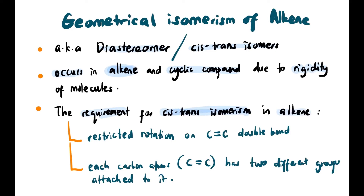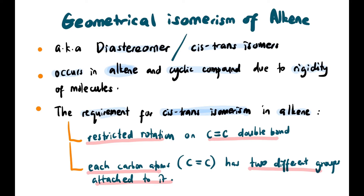Geometrical isomers of alkene ya — dia juga dipanggil sebagai diastereomer or cis-trans isomers. Dia berlaku dekat alkene and cyclic compound due to rigidity of molecule — susah modem mau bergerak. The requirement untuk cis-trans isomerism berlaku dekat alkene: number one, restricted rotation on carbon-carbon double bond.